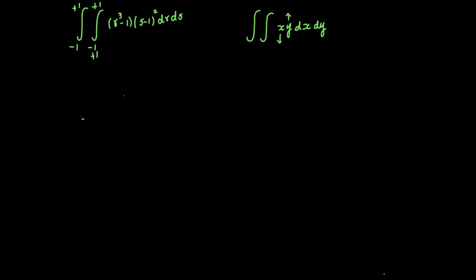We are going to do exactly the same — pull exactly the same trick here. First, I will integrate with respect to r, keeping (s-1)² as a constant. Because it is a constant, I can pull it outside the integral and put only one integration sign, pretending that (s-1)² is a constant and integrating with respect to r. The limit is from -1 to +1.